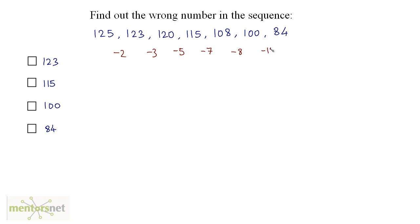And 100 minus 16 gives you 84. So where is the sequence breaking up? Well, here. Why? 2, 3, 5, 7 are all prime numbers. And 8 is not a prime number. So this should have been minus 11.